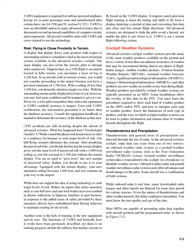Thunderstorms and precipitation: thunderstorms and general areas of precipitation are detected through the use of radar. In the advanced avionics cockpit, radar data can come from one of two sources — an onboard weather radar system or a ground weather surveillance radar system, such as the Next-Generation Radar, NEXRAD, system. Ground weather surveillance system data is transmitted to the cockpit via a broadcast, or datalink, weather service. Onboard weather radar and ground weather surveillance radar systems each offer advantages and disadvantages to the pilot. Some aircraft use a combination of both systems.